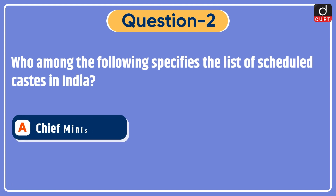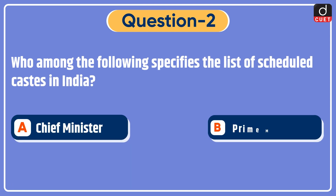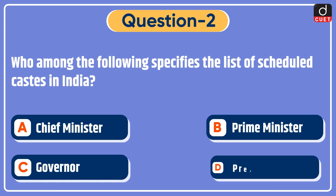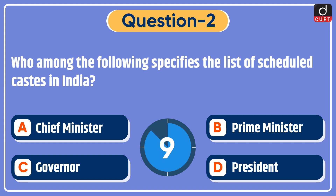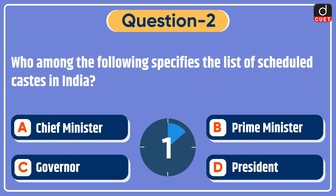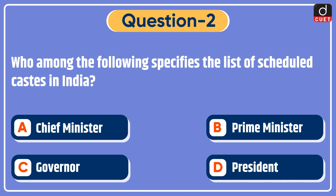Next question: who among the following specifies the list of scheduled castes in India? Chief Minister, Prime Minister, Governor, or President? The correct answer is option D, President.